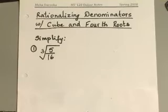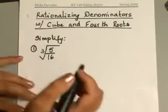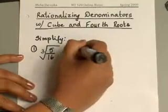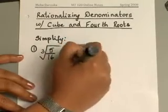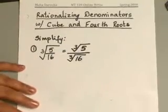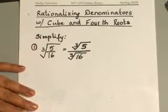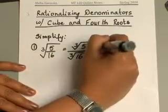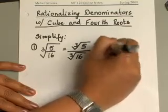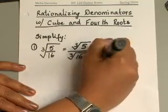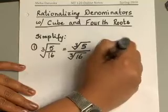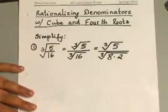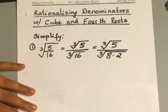The first thing we want to do is use our quotient rule and split this up into two separate radicals. Now, 16 is one of those numbers that you can simplify further. Write 16 as a product of 8 times 2, because 8 is a perfect cube, so you can bring 8 outside the cube root symbol.